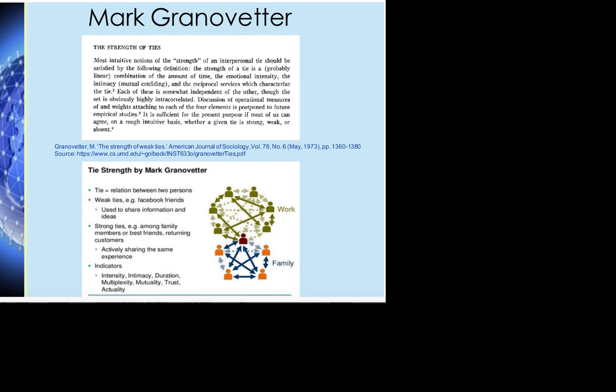Mark Granovetter is a very important social scientist who wrote a paper in 1973 — long before the advent of the internet — that became foundational to social network theory. When we talk about social network theory in this class we tend to think about internet social networks like Facebook or Instagram, but Granovetter was asking questions about how we experience our place in the social world and how that conscribes our experience of our social networks. His paper was called 'The Strength of Weak Ties,' and its title is quite counterintuitive. Most intuitive notions of the strength of ties are based on bond — time spent together, emotional intensity, intimacy, and reciprocal services.